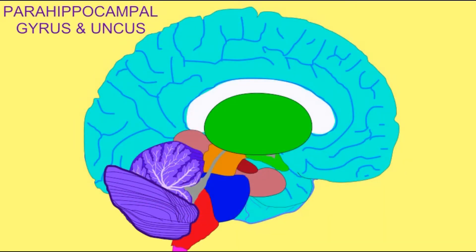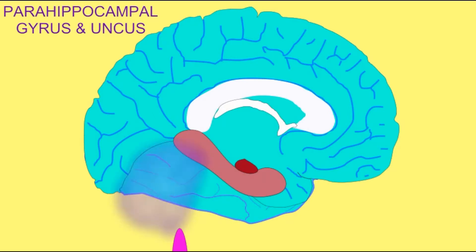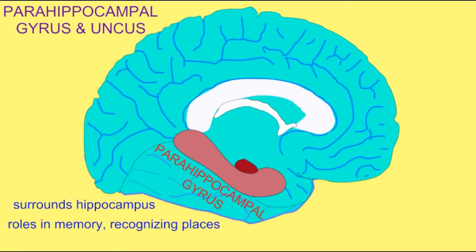If one wanted to observe the parahippocampal gyrus of the cerebral cortex or the uncus, one would have to look at the medial portion of a cerebral hemisphere. Not only would you have to remove one of the two cerebral hemispheres, but then you'd have to remove everything else as well — such as the diencephalon, the midbrain, the cerebellum, etc. — to get a look at this gyrus, this fold, which encloses the hippocampus. This is known as the parahippocampal gyrus.